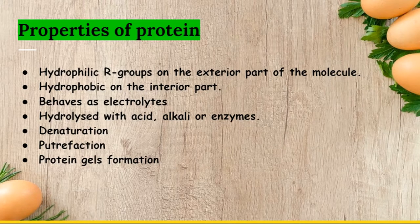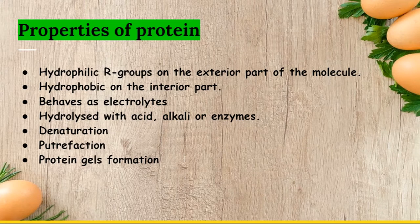Next, we will discuss properties of proteins. These have hydrophilic R groups on the exterior part of the molecule and hydrophobic on the interior part. These also behave as electrolytes due to their physical and chemical properties. If a protein contains a high content of acidic groups like aspartic and glutamic acid, its isoelectric point is low. And if it contains basic amino acids like arginine and lysine, then the protein has an increased isoelectric point. Applications of behaving as electrolytes include electrophoresis and ion exchange chromatography.